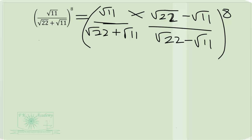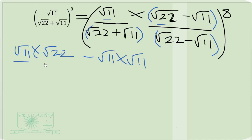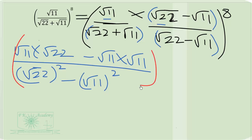So this thing here becomes difference of two squares. Let's expand. This gives us square root of 11 times square root of 22 minus square root of 11 times square root of 11, all over square root of 22 squared minus square root of 11 squared, all to exponent 8.